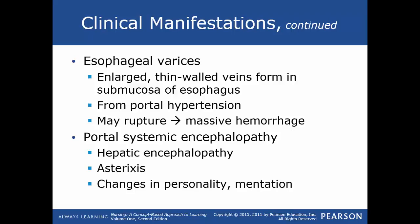Esophageal varices are enlarged thin-walled veins that form in the submucosa of the esophagus, caused by portal hypertension. They may rupture and cause massive hemorrhage. Even eating high-roughage foods can precipitate bleeding. Thrombocytopenia — platelet deficiency — and impaired production of clotting factors by the liver also contribute to the risk for hemorrhage.